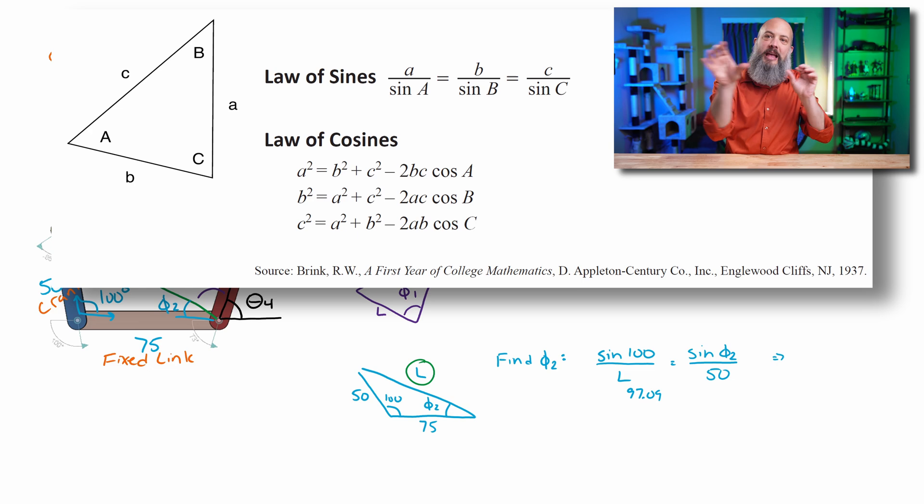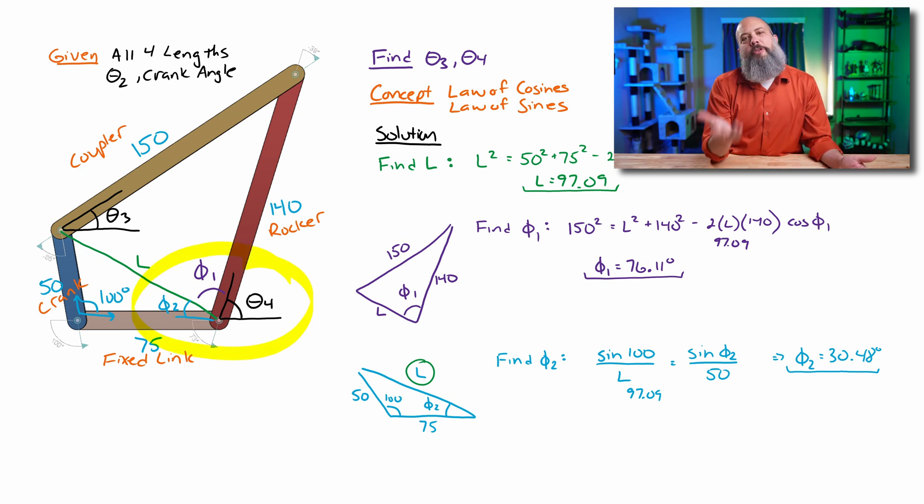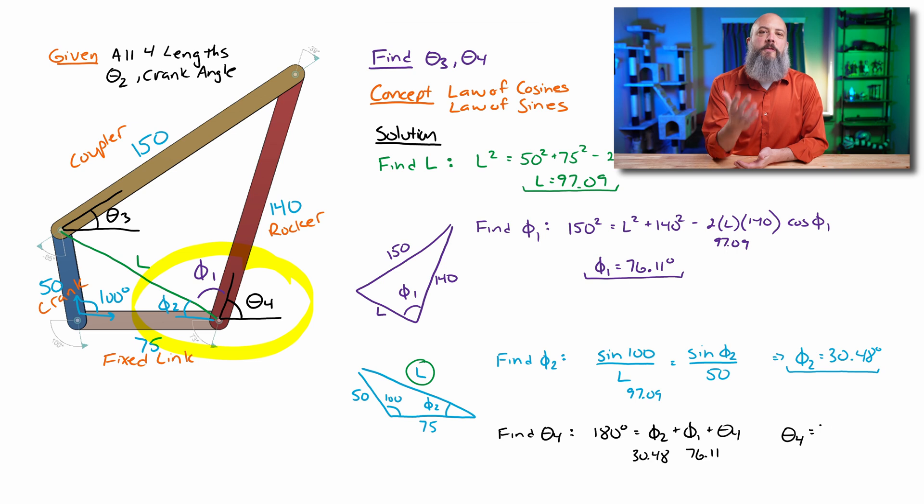So since I know sine of 100 and L, and then I know 50 and sine of phi 2, I can solve for phi 2. And that's going to give me a value phi 2 of 30.4 degrees. Subtracting phi 1 and phi 2 from 180 degrees gets me a theta 4 73.41 degrees.